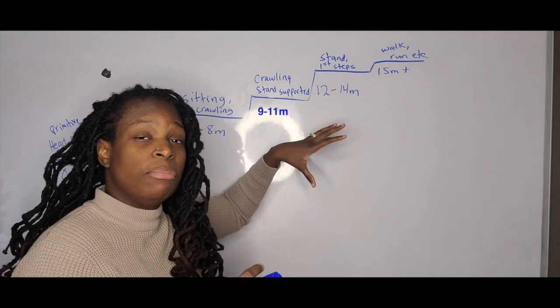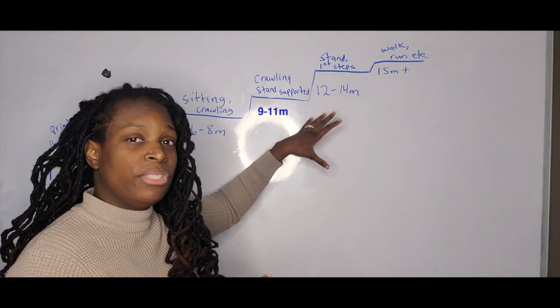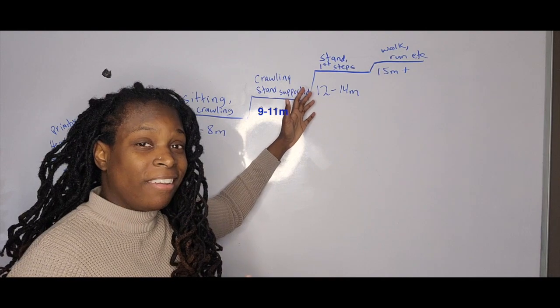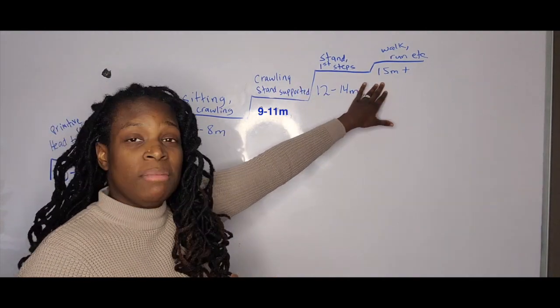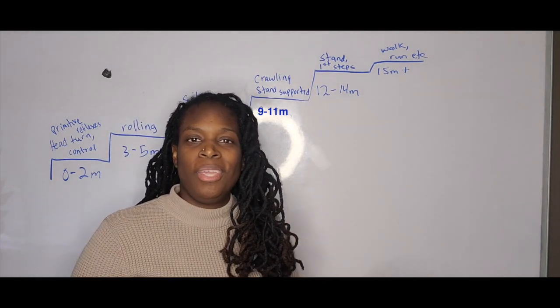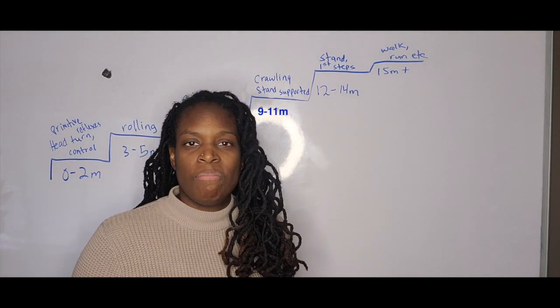So you're looking more at unsupported standing and taking those first initial steps. Some kids at 12 months are already walking. So then from, let's say 15 months and up, now you're looking at walking and running and jumping and all those other great motor skills.